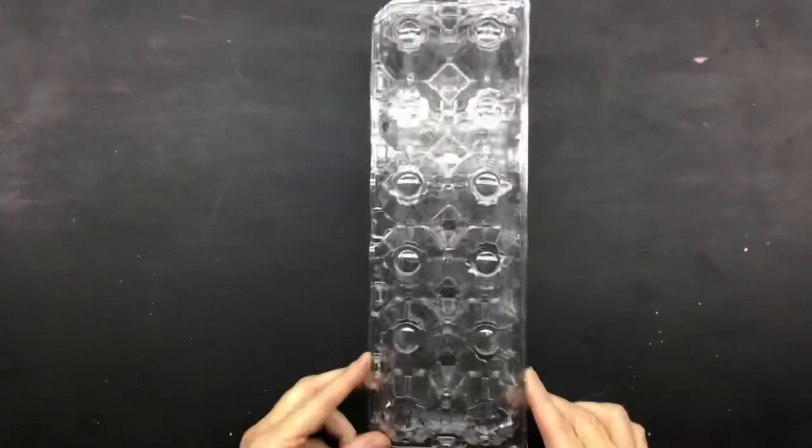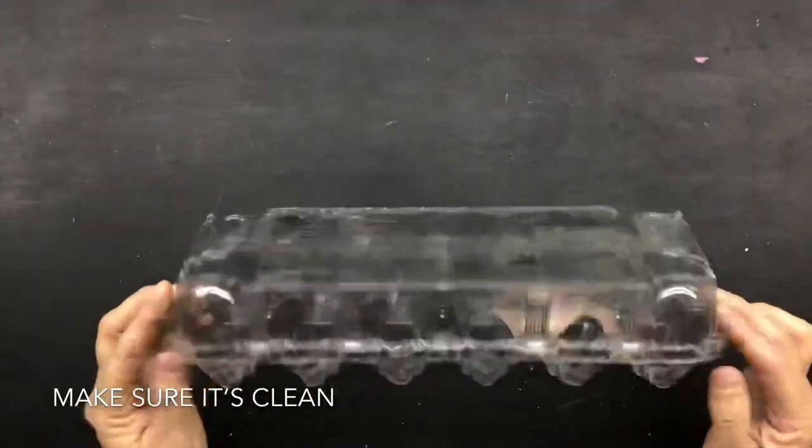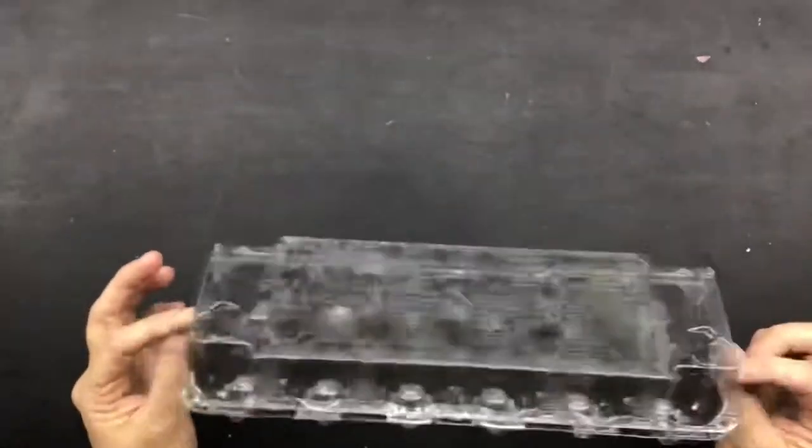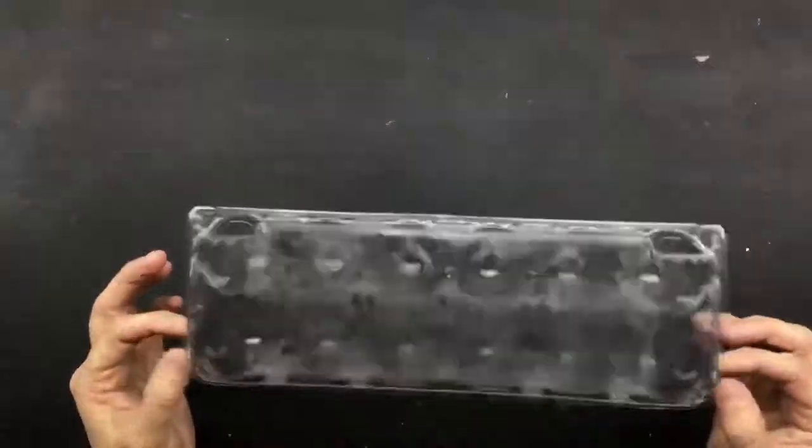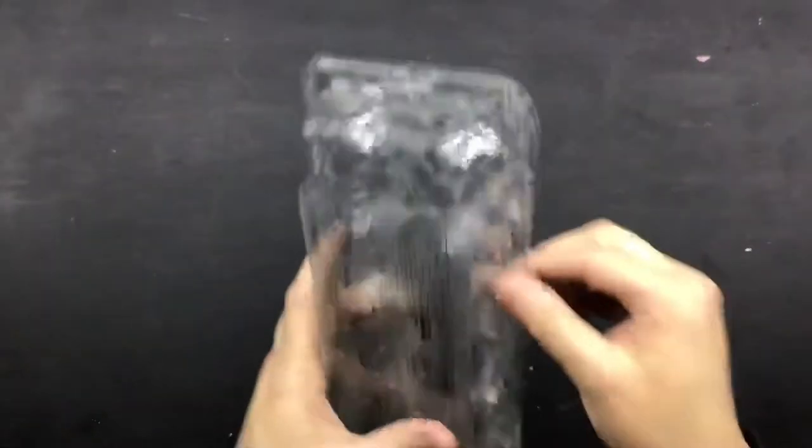Alrighty, so for this project you'll need just three things. The first thing is an empty egg carton. The one that I have today is a plastic egg carton. There are also cardboard and foam egg cartons. I just thought it would be fun to have a clear one.